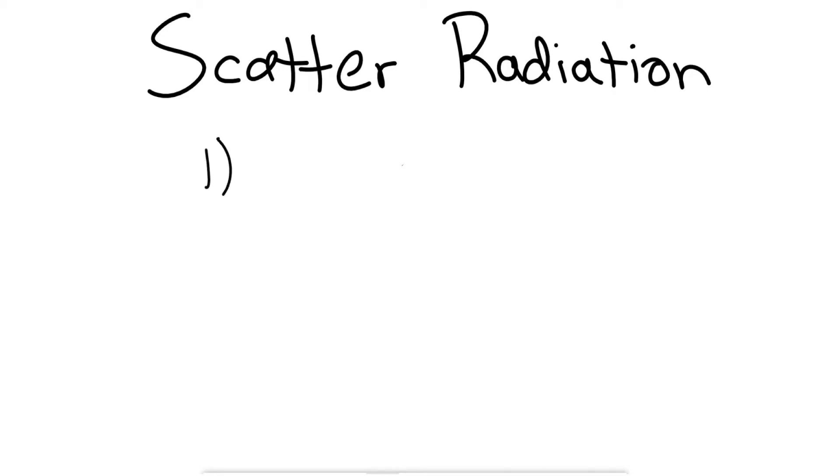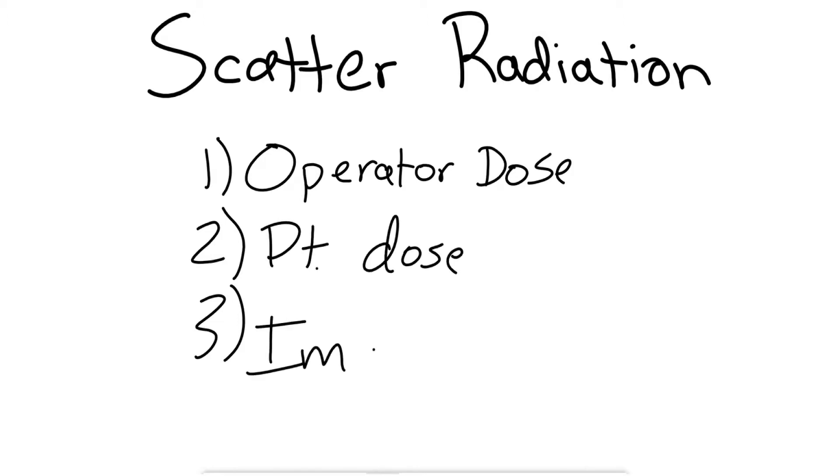When we talk about scatter radiation, there are three things that we are concerned about. The first is going to be the operator dose, how radiation can bounce off of objects or patients and affects the physician. The second will be patient dose and then the third is image quality. Today we're going to talk specifically about operator dose.